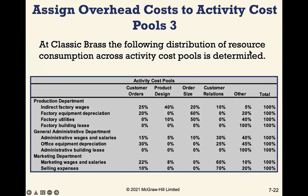Classic Brass has determined the distribution of resource consumption across each activity. For example, indirect factory wages are allocated as follows: 25% to customer orders, 40% to product design, 20% to order size, 10% to customer relations, and 5% to other. These percentages always total 100% — you are simply allocating a percentage of each cost to each activity cost pool.